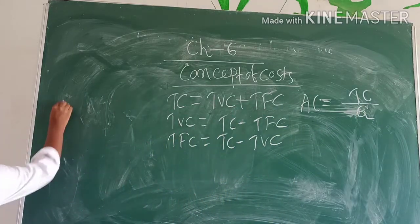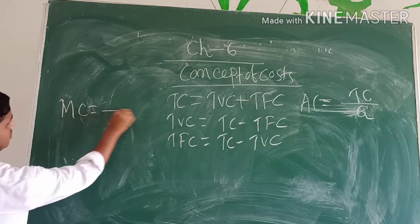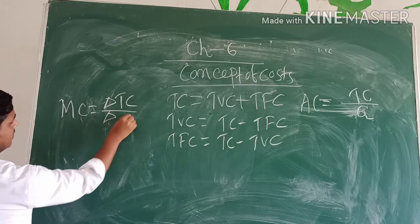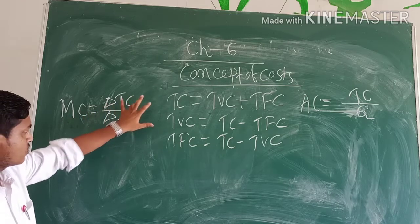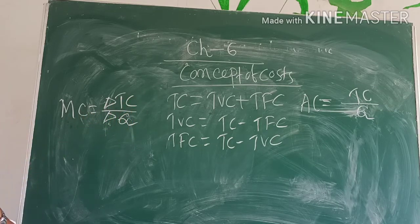Again, MC equals change in TC divided by change in Q. Marginal cost equals change in total cost divided by change in output.